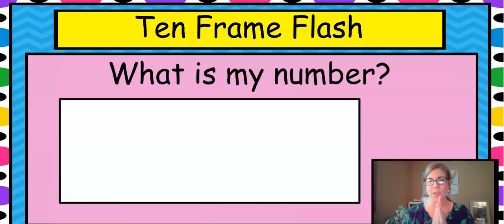We're going to play a game. We're going to play ten frame flash. When I show you this ten frame, which is five and five, you're going to tell me what my number is. How many dots are on this ten frame? Now the key to this is to look at how many are missing. This is like the I say, you say number pairs. So let's do the first one. Ready? What's my number?